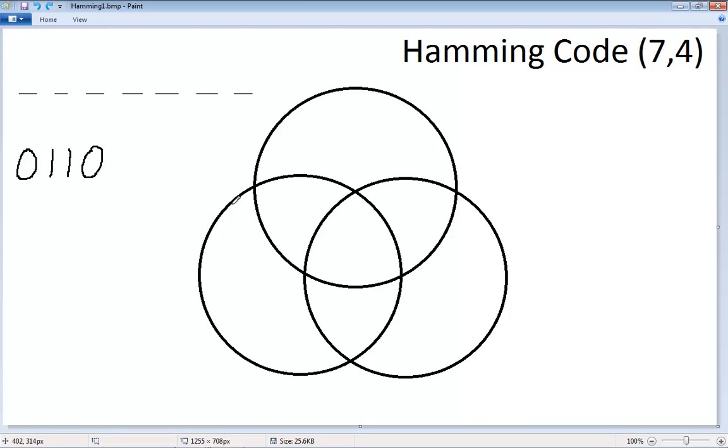We're going to write the data into this Venn diagram. We are writing the data by first selecting data space 1, and that's where our first 0 goes. Then data space 2, and that's our 1. So this is D1, D2, D3, and finally D4. So 0, 1, 1, and a 0.